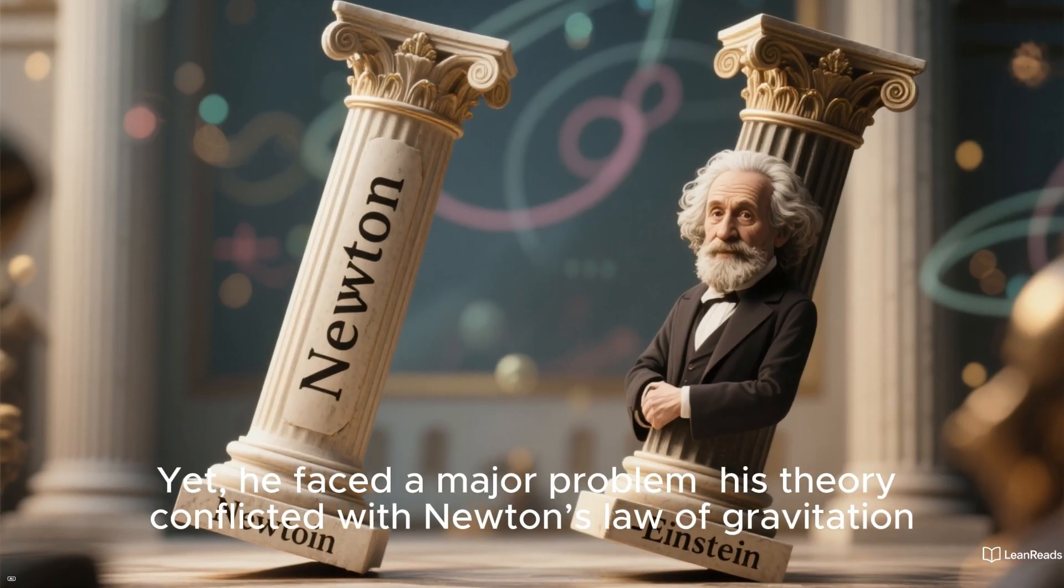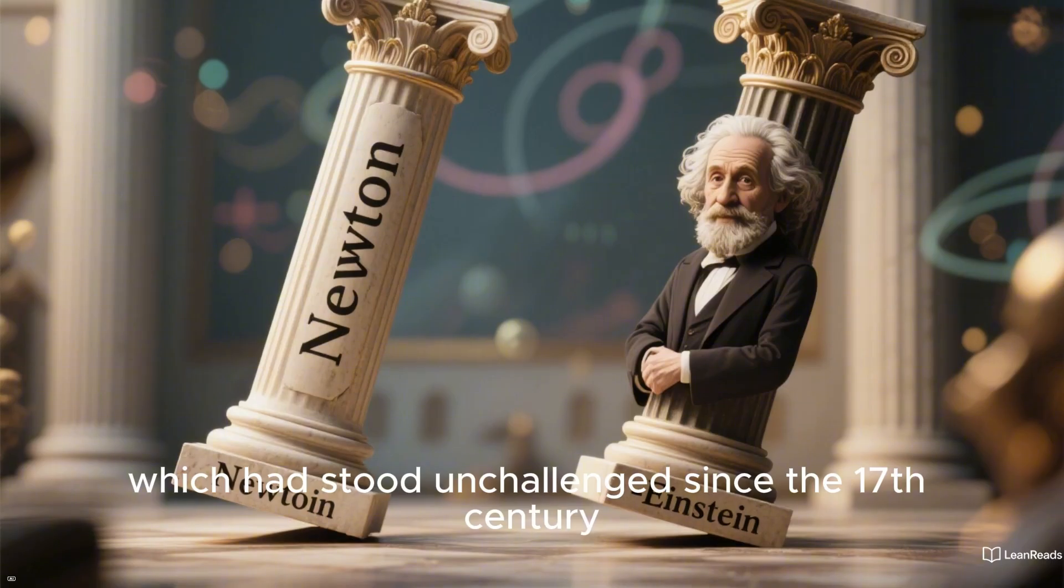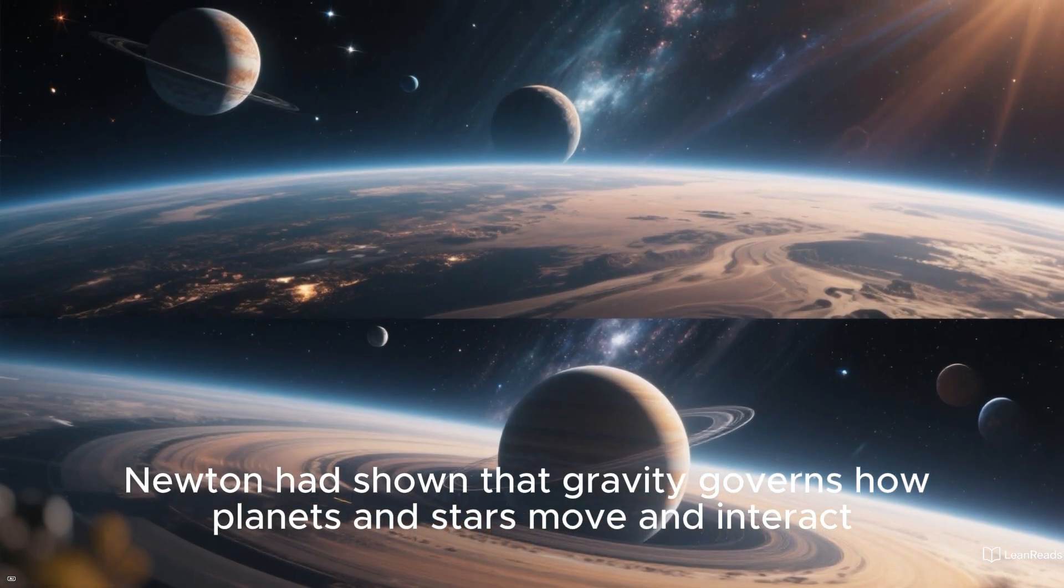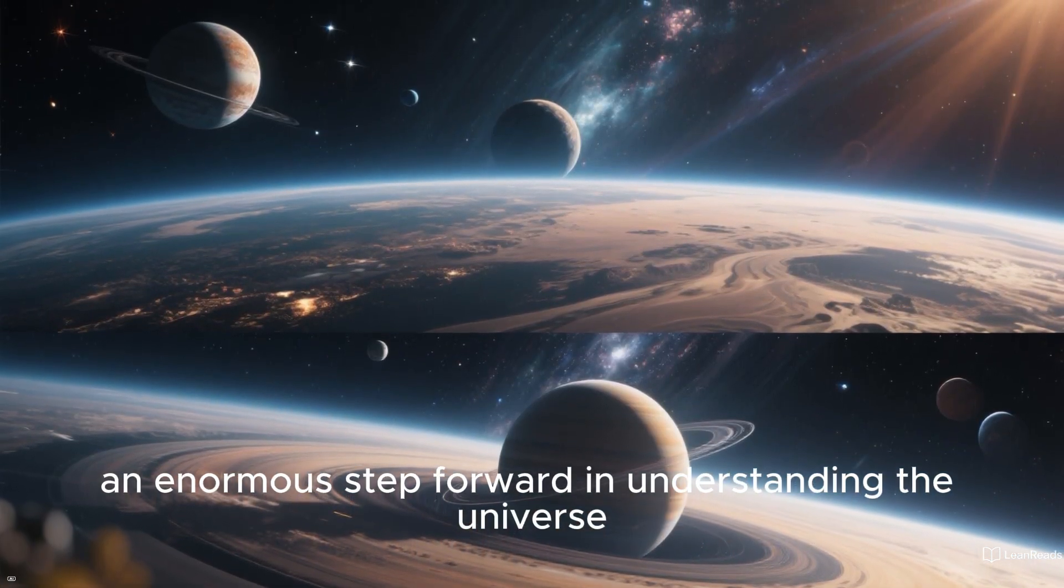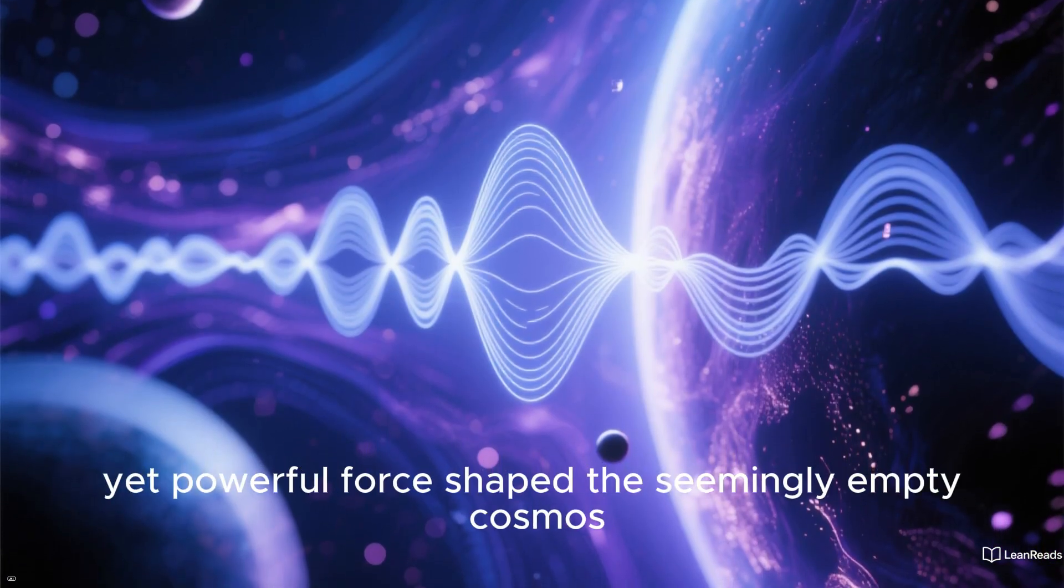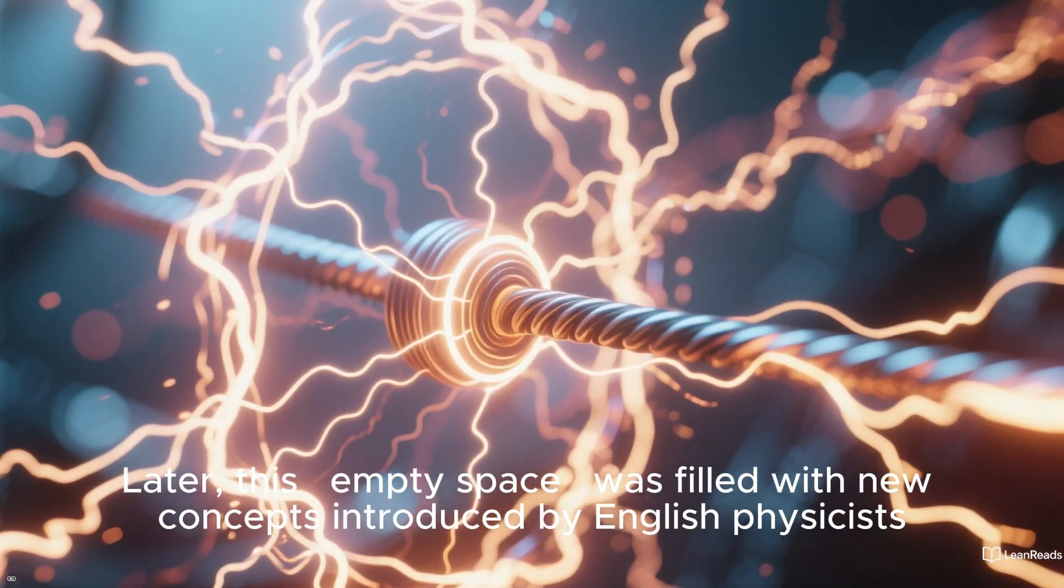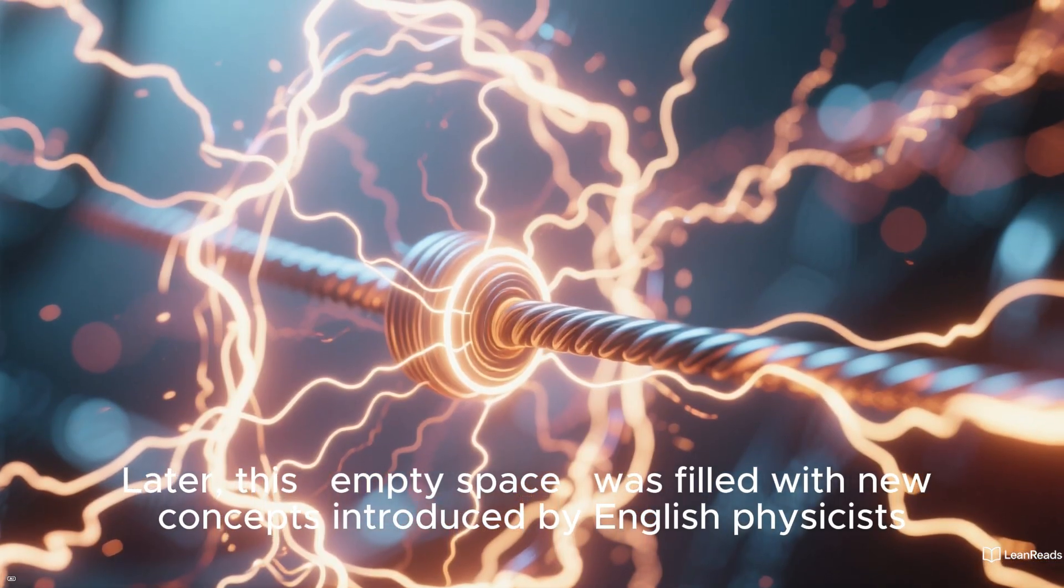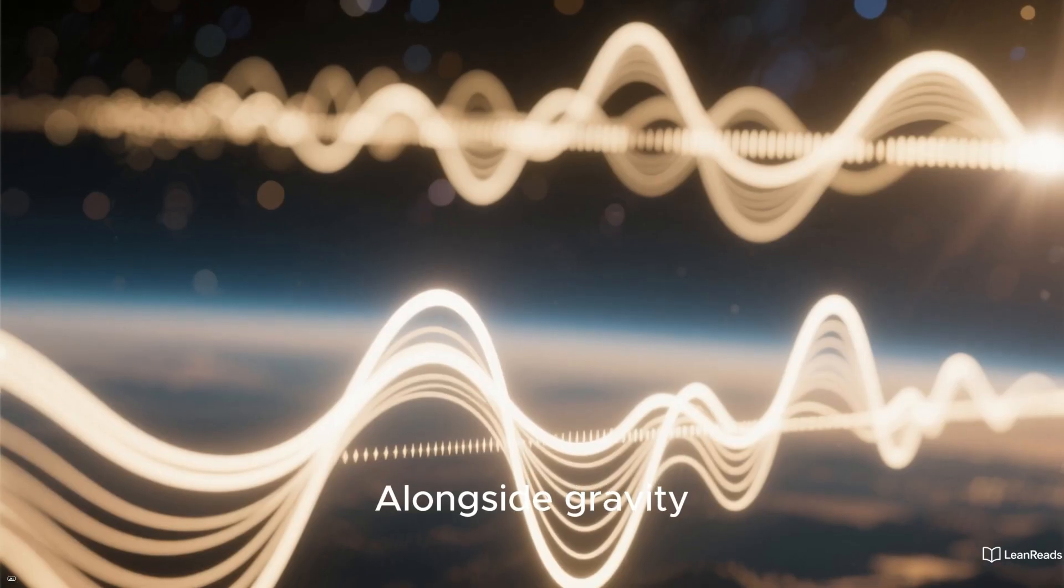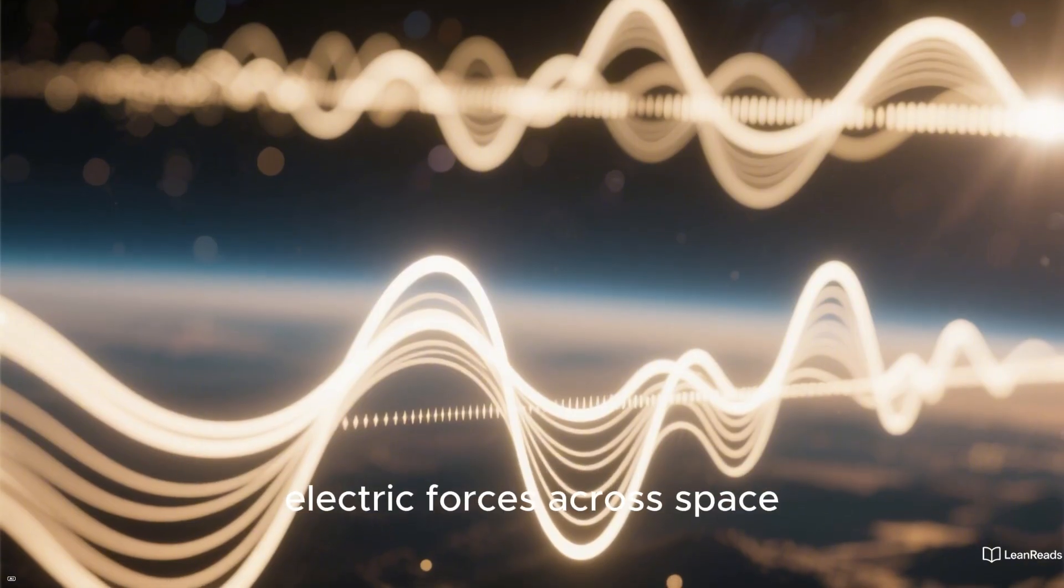Einstein's theory shocked the scientific community and made him an overnight sensation. Yet, he faced a major problem. His theory conflicted with Newton's law of gravitation, which had stood unchallenged since the 17th century. Newton had shown that gravity governs how planets and stars move and interact, an enormous step forward in understanding the universe. It was the first time humanity recognized that an invisible yet powerful force shaped the seemingly empty cosmos. Later, this empty space was filled with new concepts introduced by English physicists Michael Faraday and James Clerk Maxwell: the electromagnetic field. Alongside gravity, electromagnetic fields showed that radio waves could carry electric forces across space.